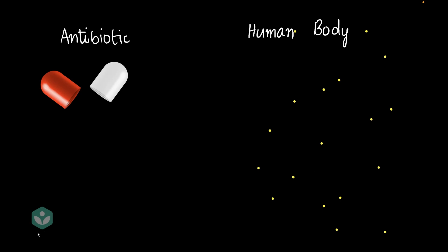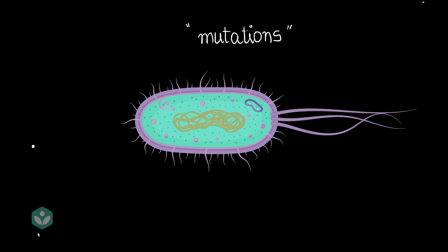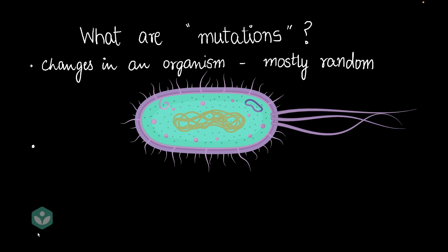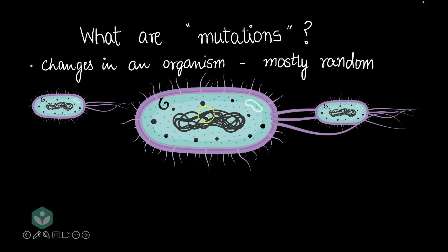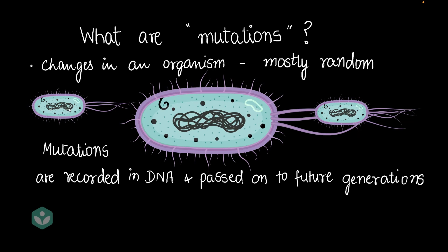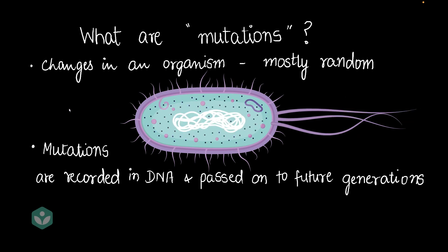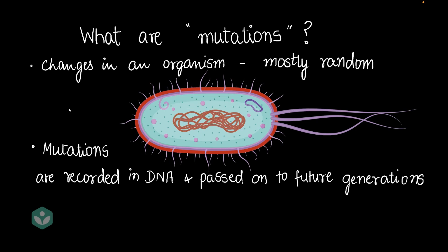This story sounds amazing, but there's one problem — something called mutations. What exactly are mutations? Changes in an organism, mostly random changes, are called mutations. For example, an organism may develop some changes. Most mutations are just random, but there's something interesting: mutations can get carried over from generation to generation. If an organism reproduces, its offspring carry those same characteristics, because mutations are recorded in the DNA and passed on to future generations. So you could have a lot of different mutations.